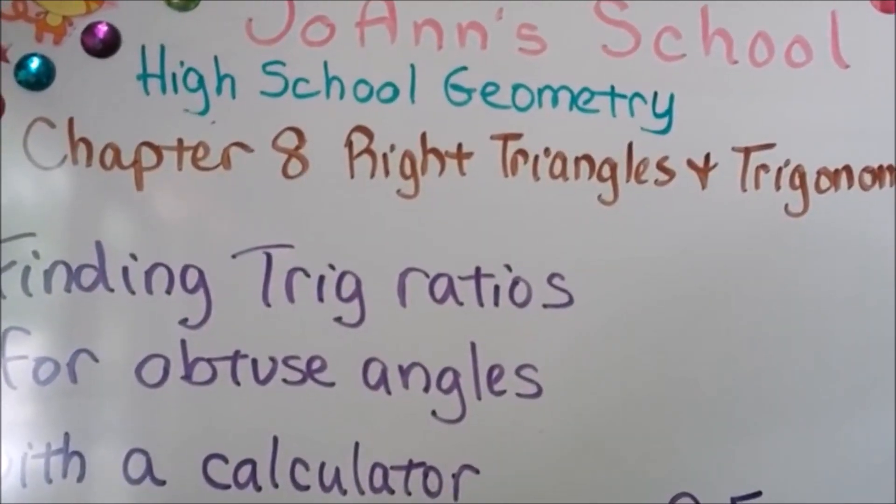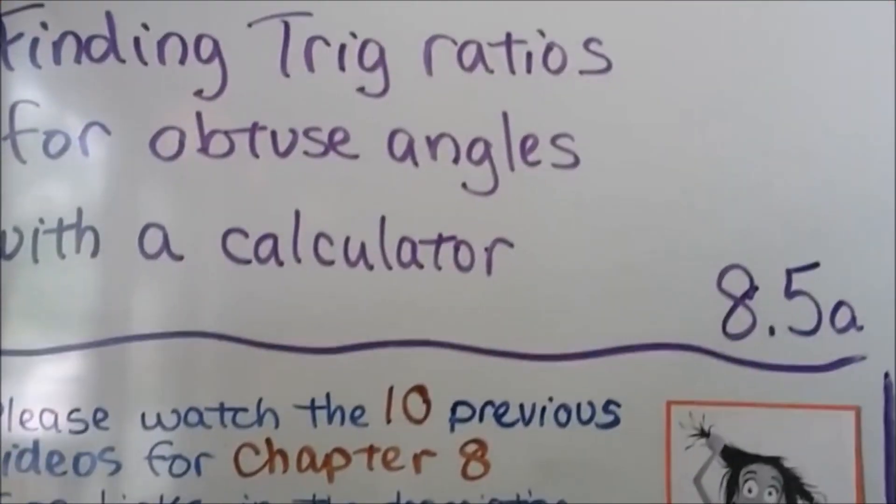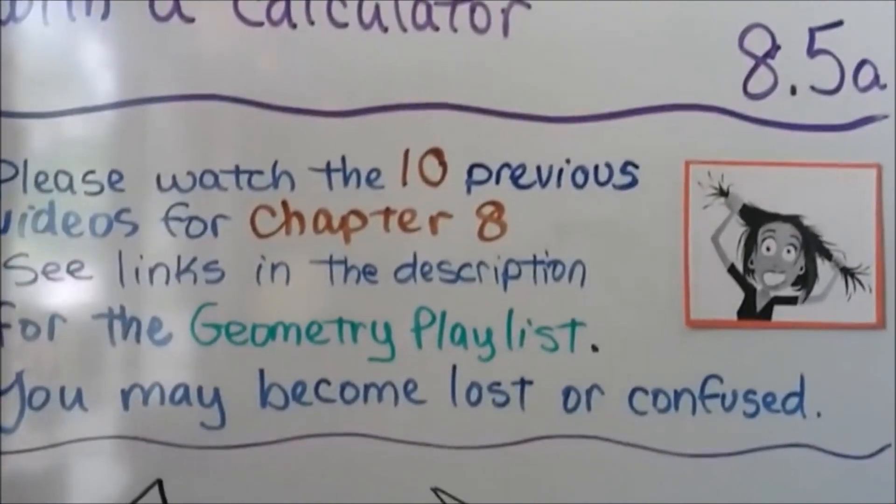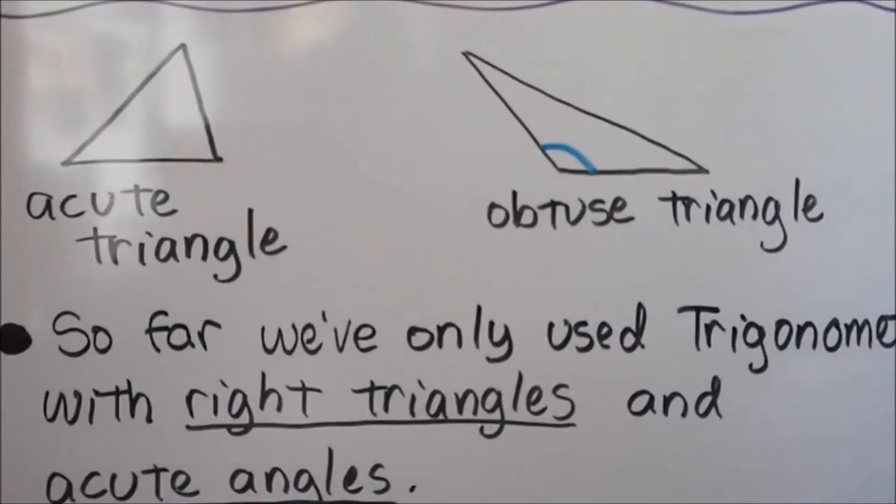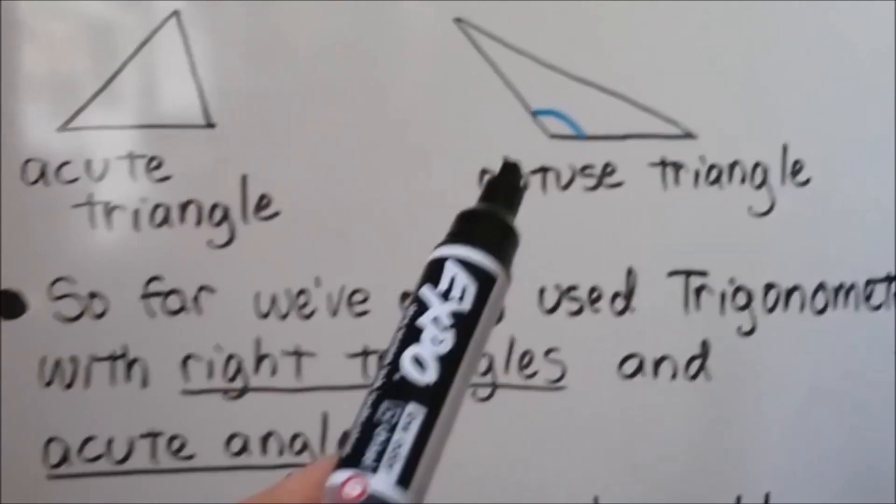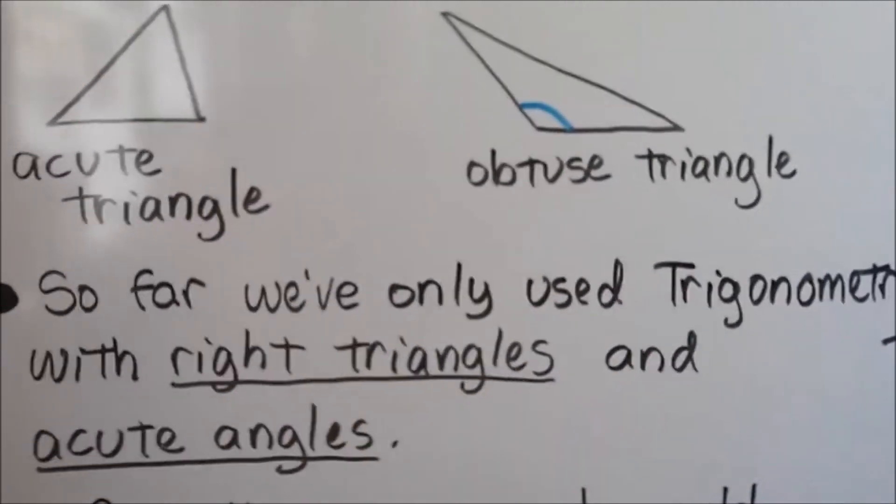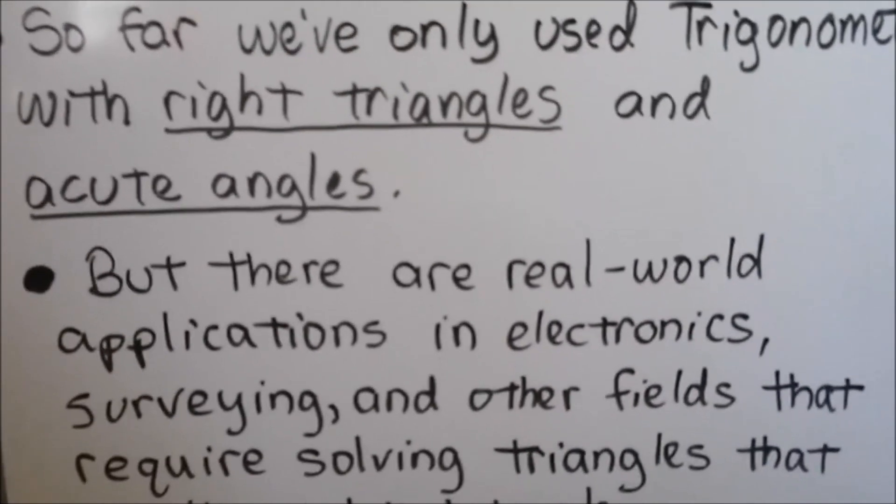Finding trig ratios for obtuse angles with a calculator. This is 8.5a. We have 10 previous videos for chapter 8 that are in the geometry playlist in the description. So an acute triangle has acute angles. An obtuse triangle has an obtuse angle. And so far we've only used trigonometry with right triangles and acute angles.